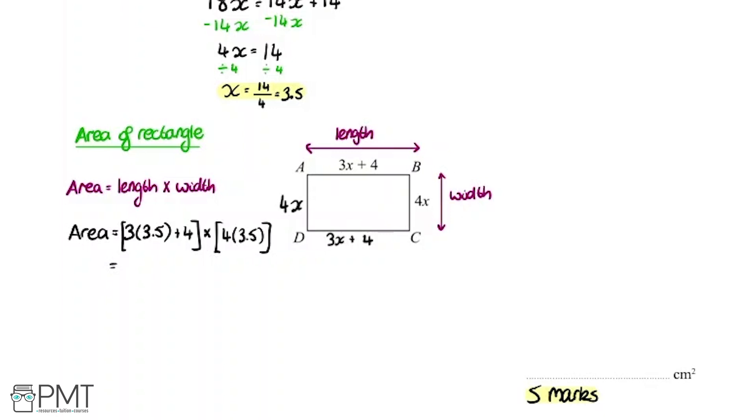So I'm going to work that out step by step. First we're going to work out what's inside both these brackets. So 3 multiplied by 3.5 is 10.5 and we've still got plus 4 here. That's multiplied by 4 multiplied by 3.5, which is 14. Now this bracket first we've got 10.5 plus 4 which is 14.5, and that's multiplied by this bracket here, so 14. And putting that into the calculator we get the final answer of 203.